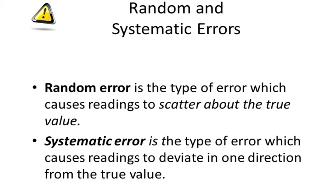Random and systematic error. Random error is the type of error which causes readings to scatter about a true value. However, systematic error is the type of error that causes readings to deviate in one direction from the true value.